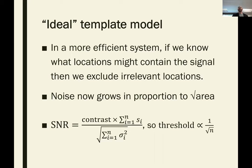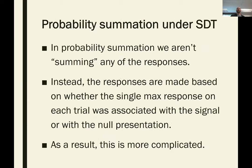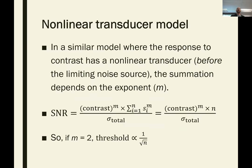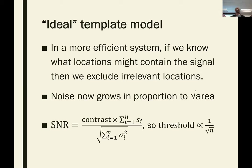You can also combine these: a nonlinear transducer with a template gives the fourth-root result. So that's simple for additive summation. In probability summation it's more complex because we aren't adding together the responses — instead we look at that single maximum response and ask which interval it occurred in or which location in space it's associated with.